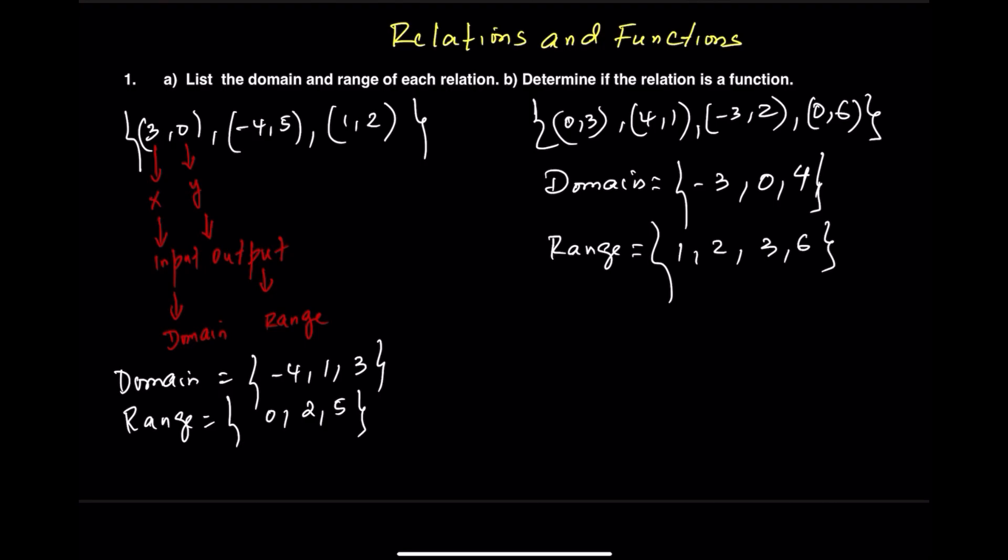That's how we pull the domain and range from a set of ordered pairs. Next, how can we decide if the relation represents a function? A relation is considered a function only if every input is linked to exactly one output. If any input is tied to more than one output, it is not a function.